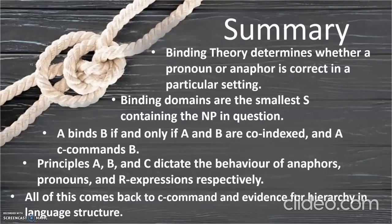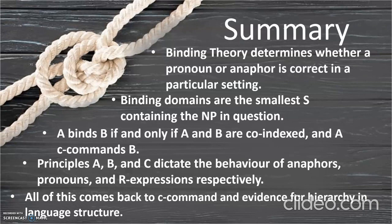Those are the three principles of binding — here's a summary of the lecture. Binding theory determines whether a pronoun or anaphor is correct in a particular setting. Binding domains are the smallest S-node containing the NP in question. A binds B if and only if A and B are co-indexed and A C-commands B. Principles A, B, and C dictate the behavior of anaphors, pronouns, and R-expressions respectively. Ultimately, all of this comes back to C-command and evidence for hierarchy in language structure — binding is a really important part of thinking through relations in language. I hope you enjoyed the lecture and I'm looking forward to discussing this with you in the tutorial.